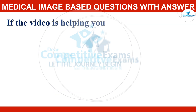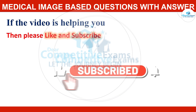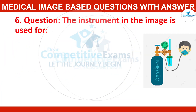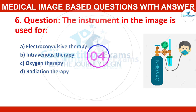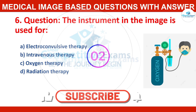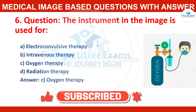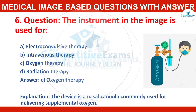Question number six. If this video is helping you, please support us by liking and subscribing to our channel. The instrument in the image is used for: electroconvulsive therapy, intravenous therapy, oxygen therapy, or radiation therapy? The correct answer is oxygen therapy. The device is a nasal cannula, commonly used for delivering supplemental oxygen.